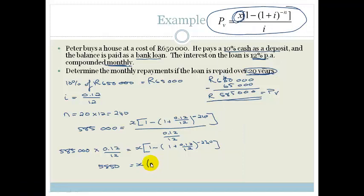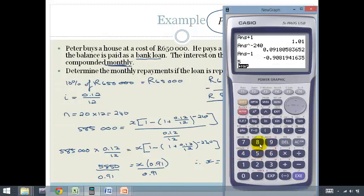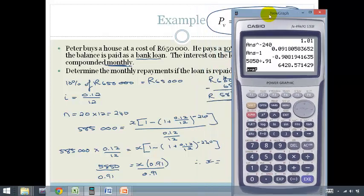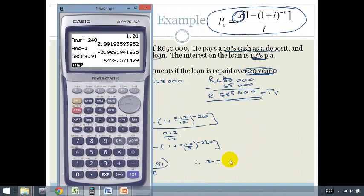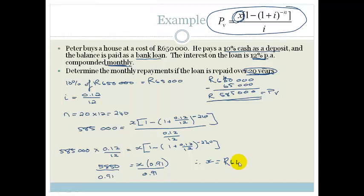So now we need to divide both sides by 0.91. And therefore x is going to be 5850 divided by 0.91, which equals 6,428.57. So do you see that there is the amount of money he's going to pay per month? So per month, for 240 months, he is going to pay 6,428.57.